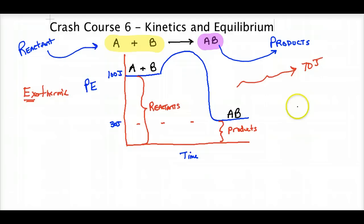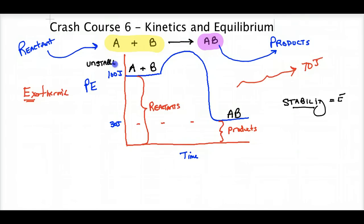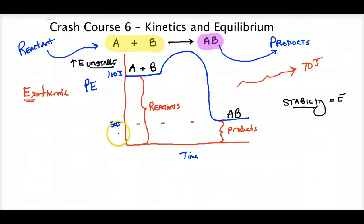Another way to evaluate that is in terms of stability. Stability is dependent upon energy. A and B, because they have higher potential energy compared to the products, are unstable. Unstable means high energy — these things probably burn or possibly explode. Something with high potential energy will eventually do something with that energy. So unstable and high energy go together.